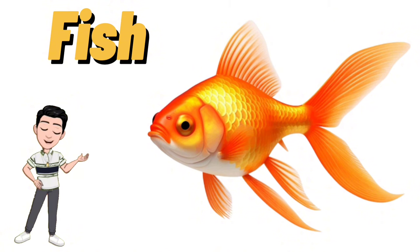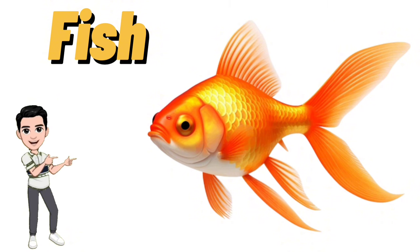What is this? Yes, F for fish. A fish is a cold-blooded aquatic vertebrate with gills and fins, typically covered in scales. Fish inhabit various bodies of water and come in a wide range of shapes, sizes, and colors.